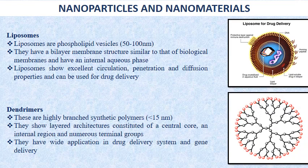The second nanomaterial is a dendrimer — highly branched synthetic polymers less than 50 nanometers. They show layered architectures with a central core, an internal region, and numerous terminal groups. They can be used in drug delivery and gene delivery systems. Their key characteristics include monodispersity, water solubility, encapsulation ability, and a large number of functionalizable peripheral groups. Other applications involve conjugating chemical species to the dendrimer surface as detecting agents, dye molecules, affinity ligands, targeting components, radioligands, imaging agents, or pharmaceutically active compounds.